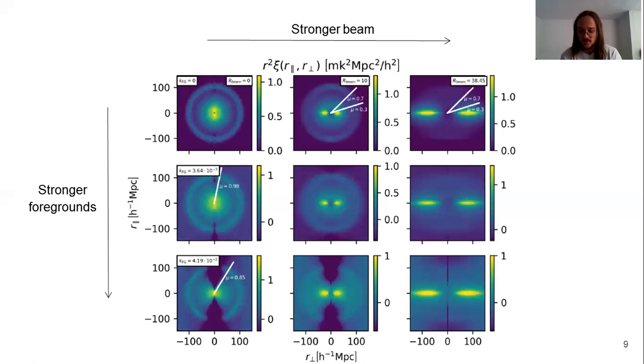And as we see, in some cases, the BAO seems to disappear completely. Our work will focus on recovering precisely this BAO in those cases, using only the information that we see here, and using the knowledge of how the observational effects impact our correlation function.